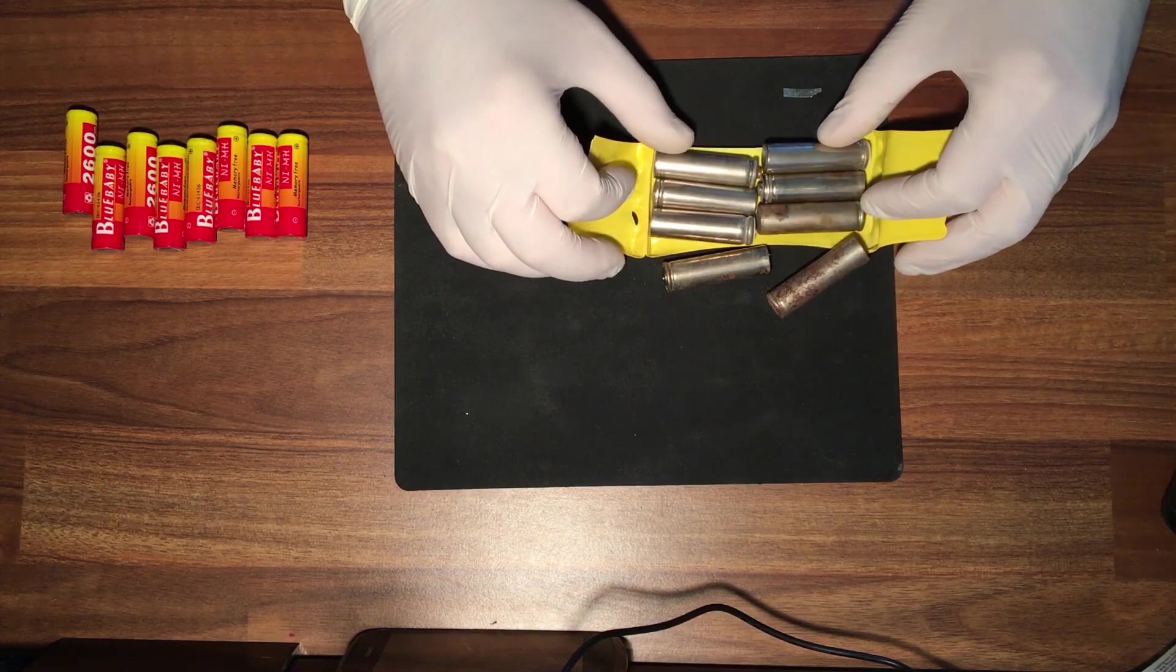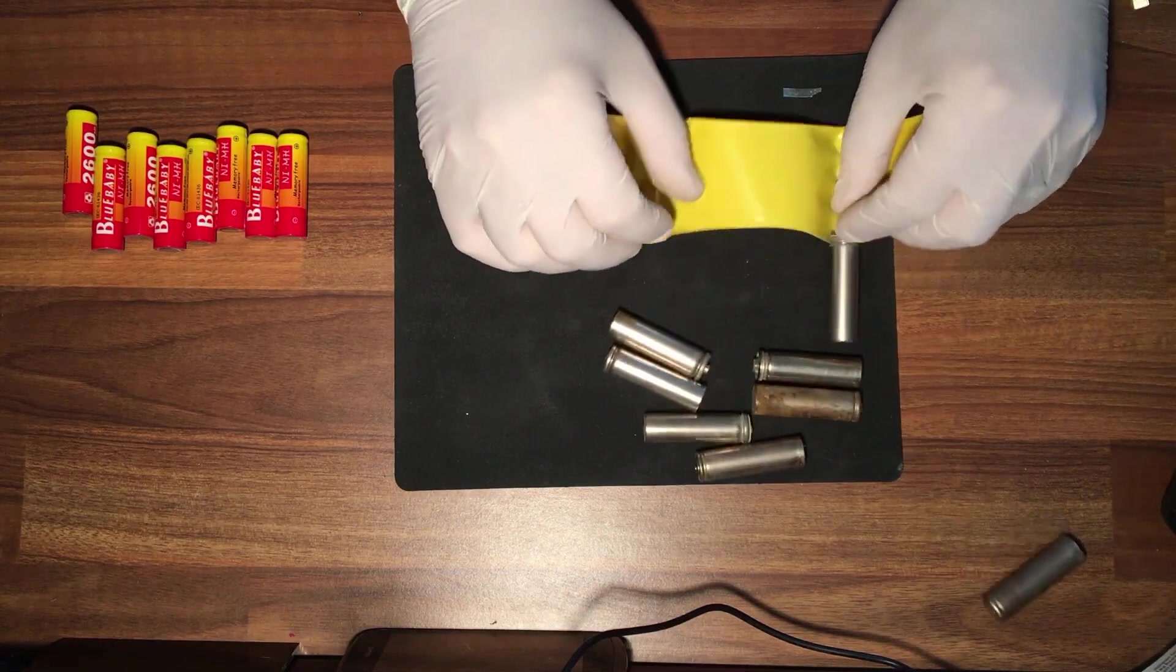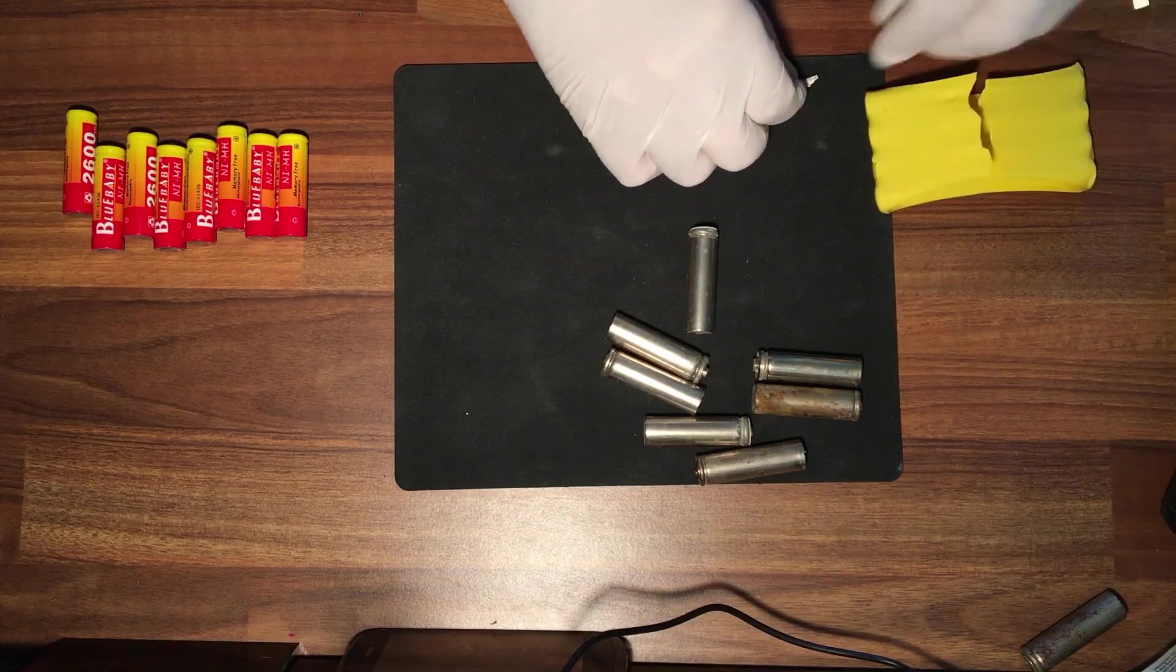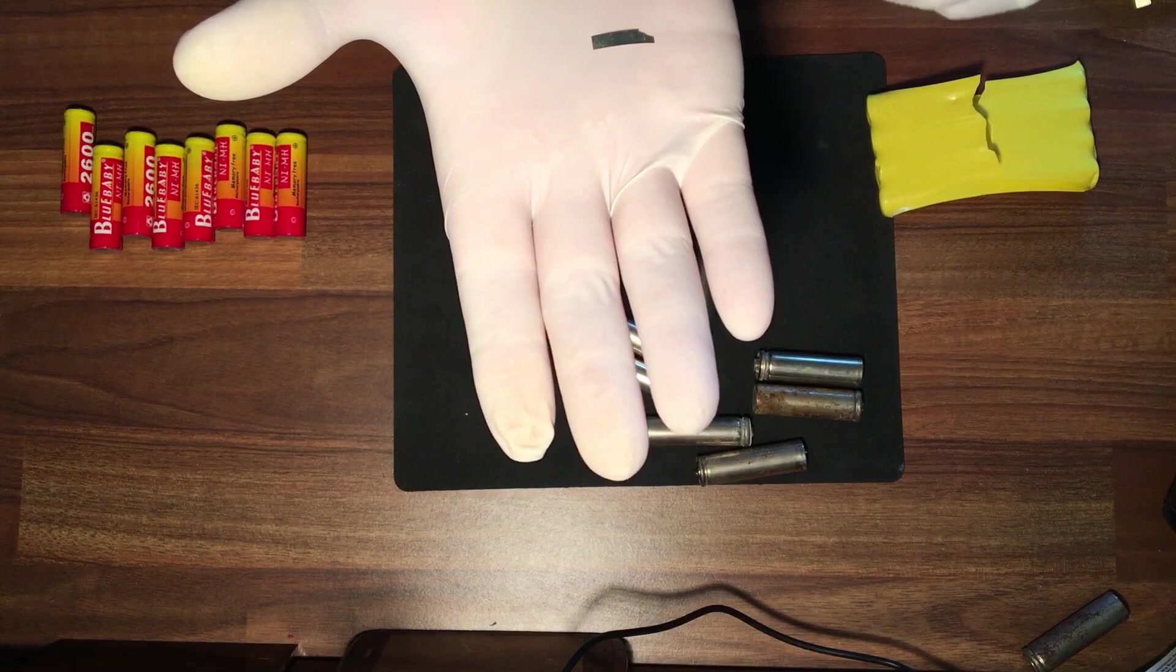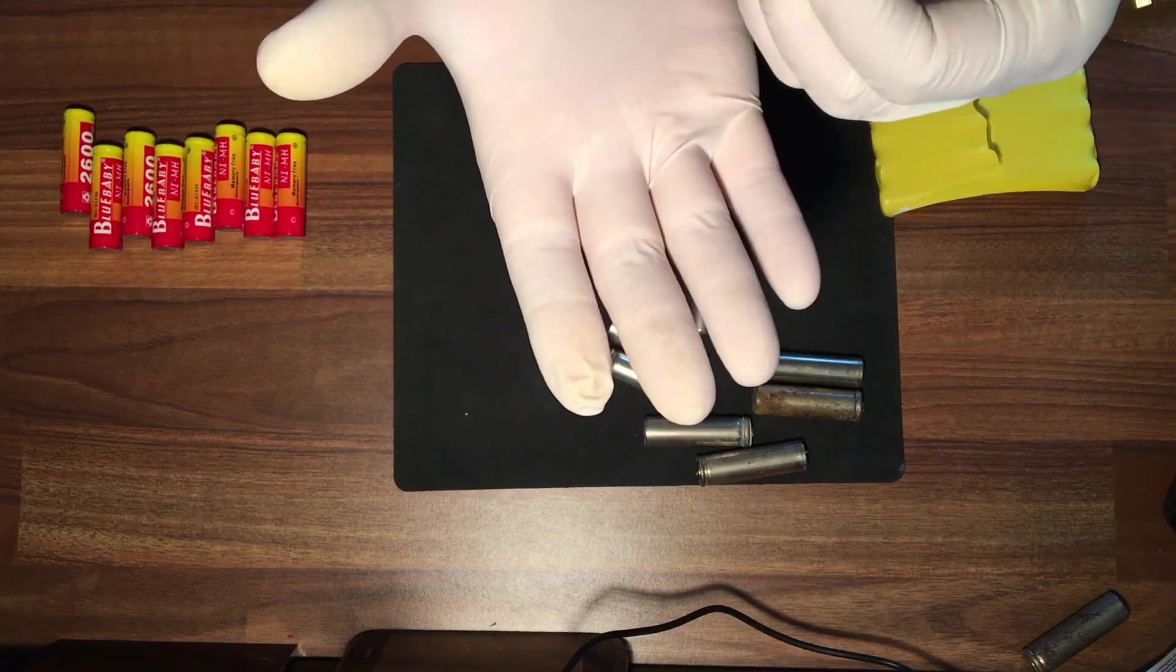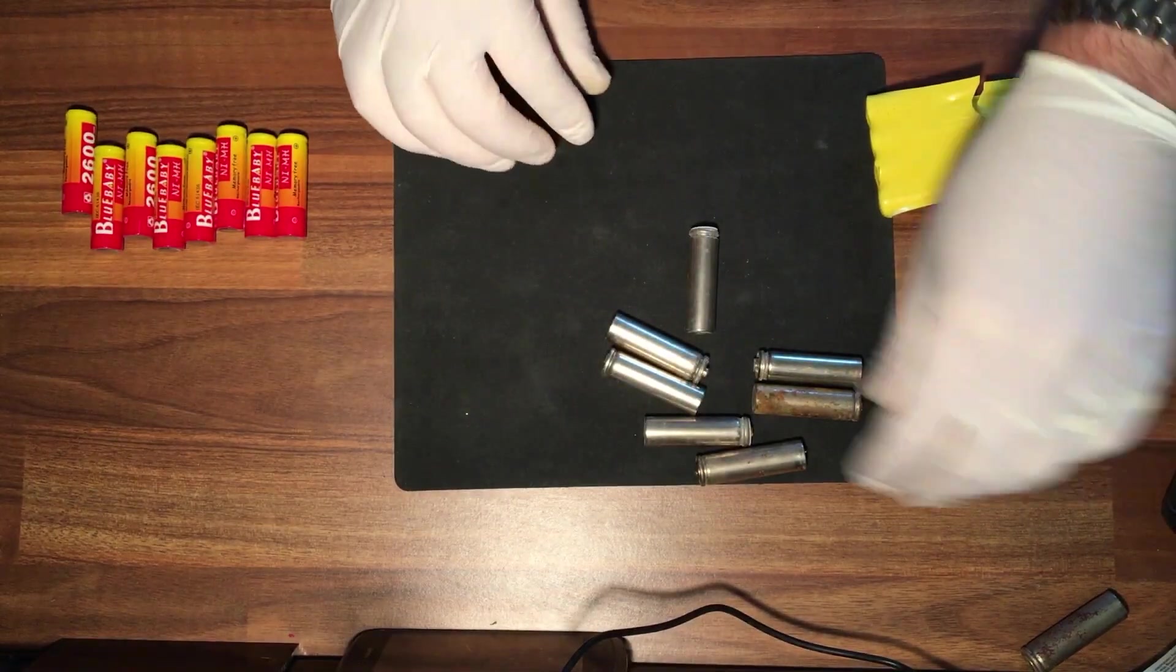Now I've already separated them and the way they were joined together was with a little metal tab as you can see here. So what we need to do is replicate that for the replacement batteries.